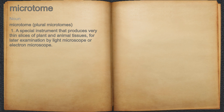Microtome. Noun. 1. A special instrument that produces very thin slices of plant and animal tissues for later examination under a light microscope or electron microscope.